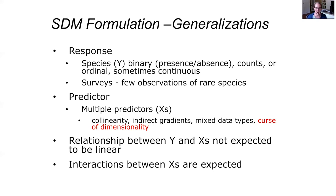We can make some generalizations about model formulation in species distribution models based on the type of data. Response variables are often binary — species presence/absence — or if a more continuous measure of abundance, they may be counts (not typically normally distributed) or ordinal classes of abundance. For rarer species, we tend to have very few observations, so even if you surveyed very many locations, you'd have very few occurrences, which is another constraint on the size of your dataset.